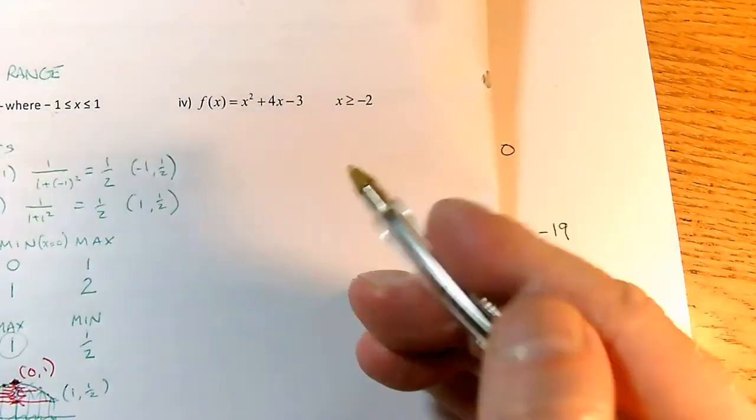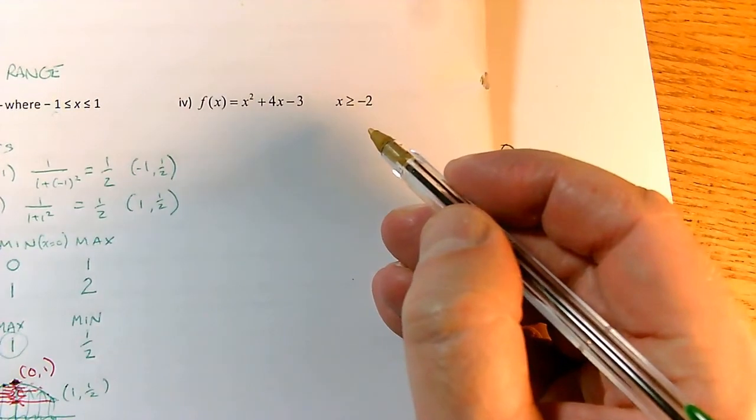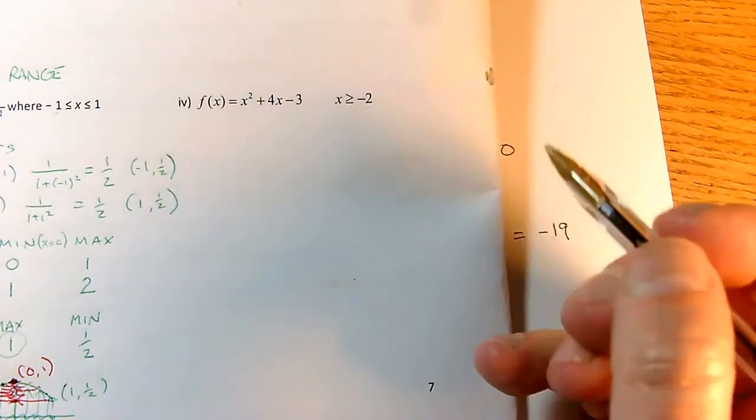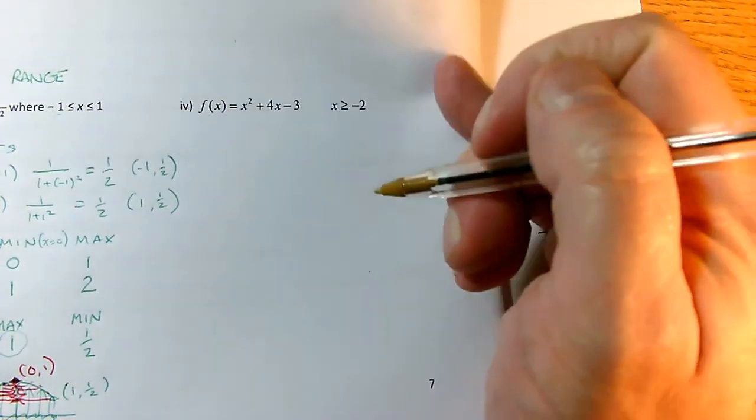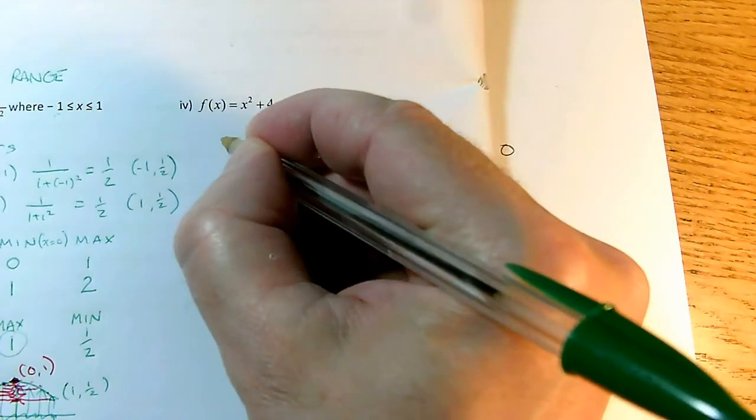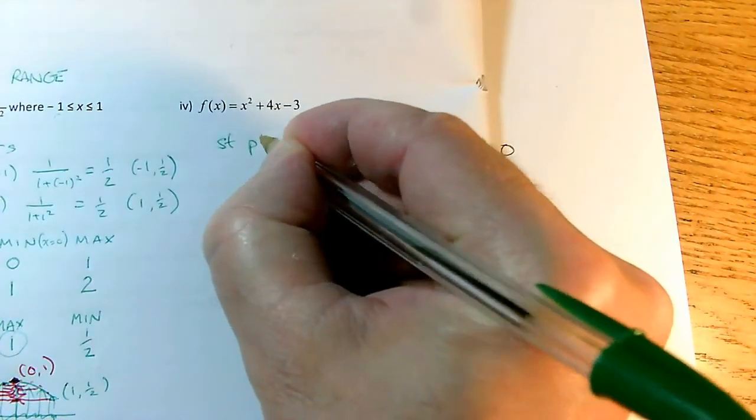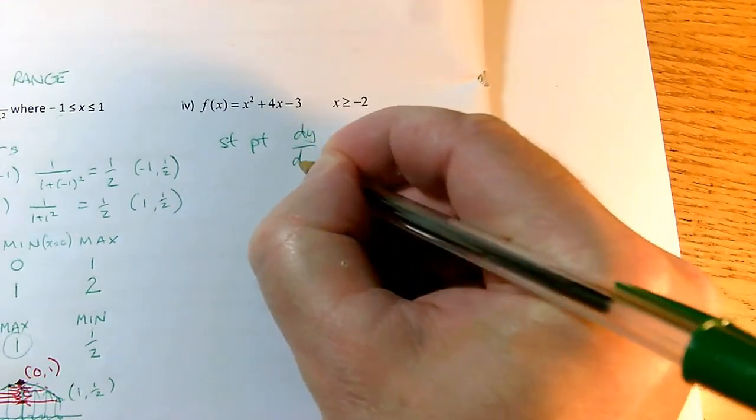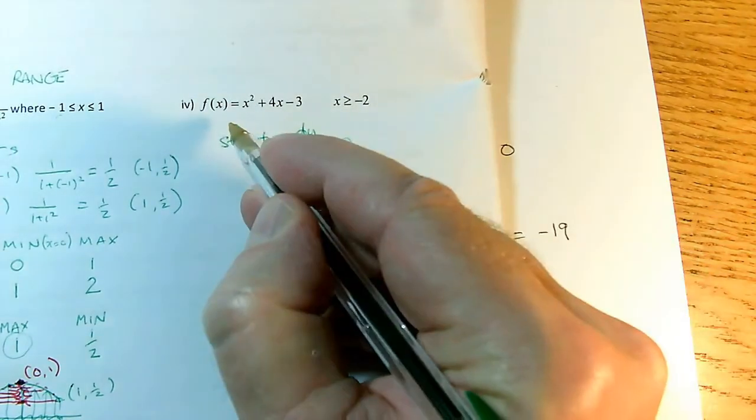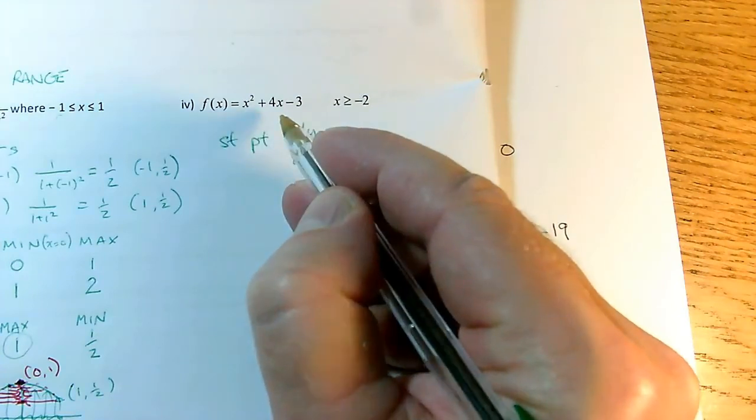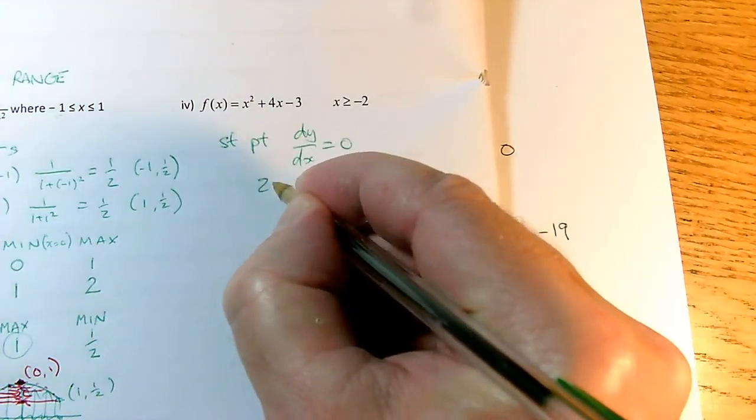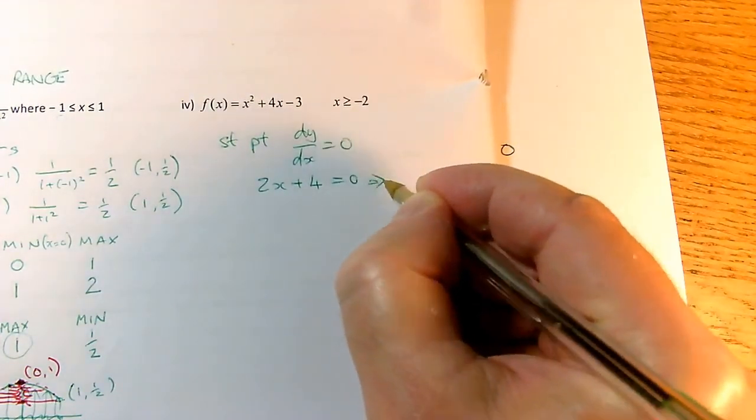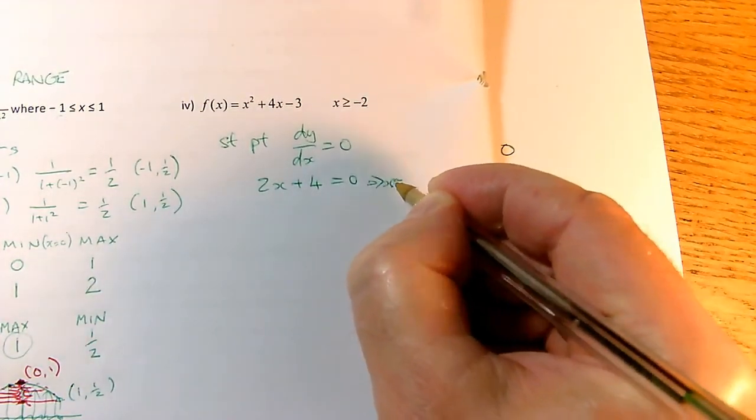So this again has got an endpoint, x greater than or equal to minus 2. But this is an unknown parabola. I need to actually do some work with this parabola to find out what it looks like. I'm going to use the stationary point method because that will apply more easily to things other than parabolas. So it's going to have a stationary point when dy by dx equals 0, where I'm using y to mean the same thing as f of x. So dy by dx will be 2x plus 4. That's got to equal 0, so that gives me an x value, if I solve that, of minus 2.